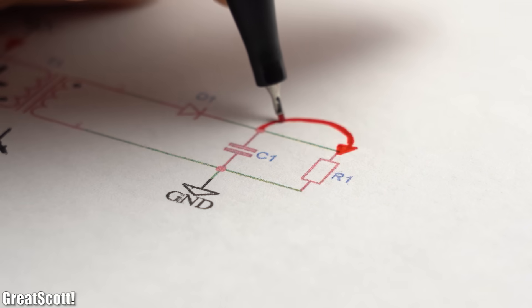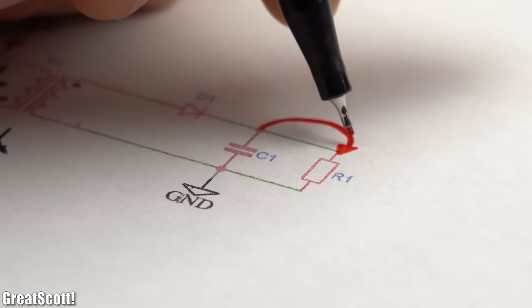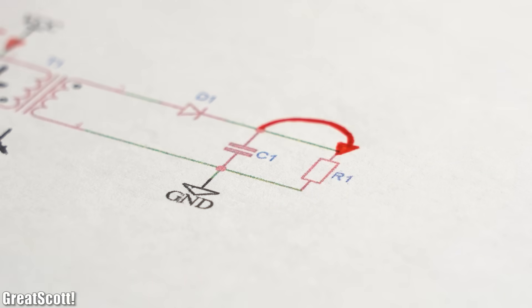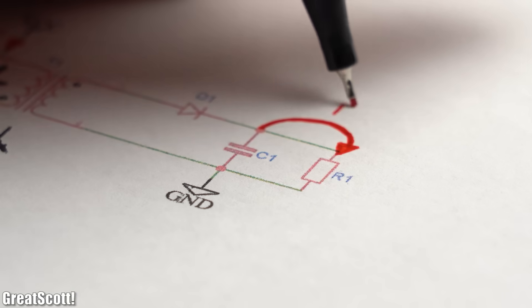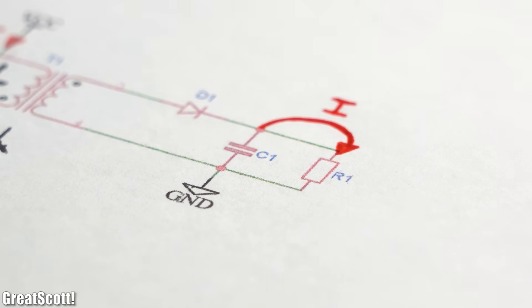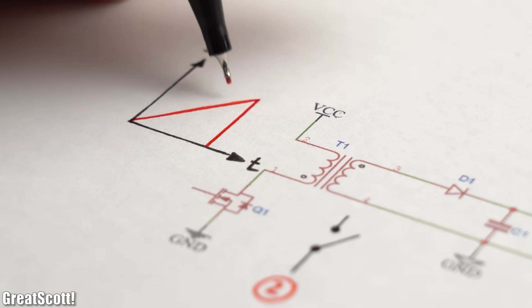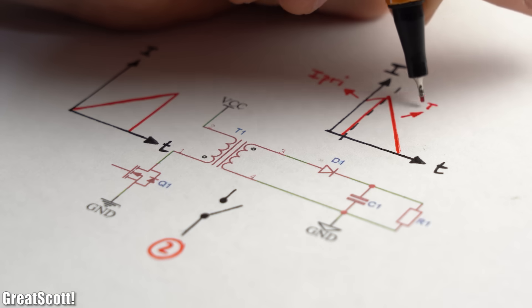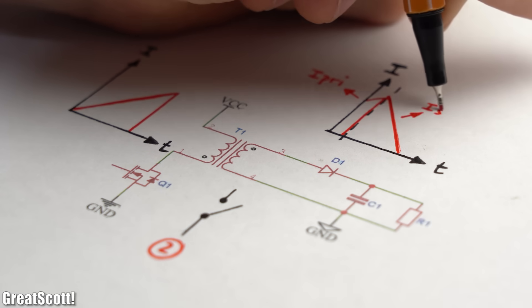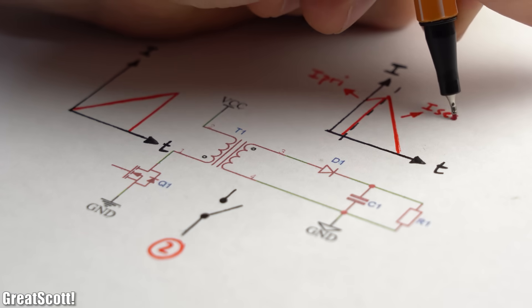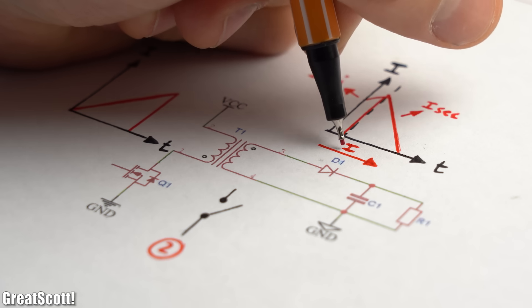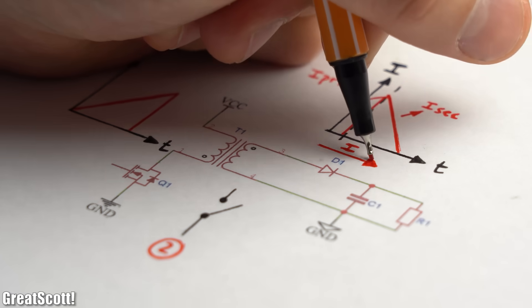But it is noteworthy that during this phase the load still gets supplied with energy through the capacitor, which in the now following second switch state will get charged up. In this phase, the MOSFET switch opens. Thus the primary side current falls abruptly, and the whole stored energy gets transferred to the secondary side, in which a now linearly decreasing current runs in flow direction to the diode.